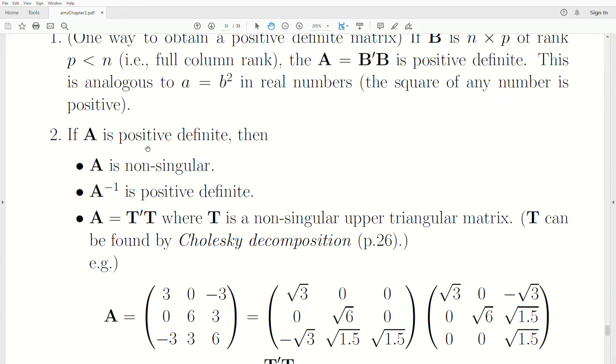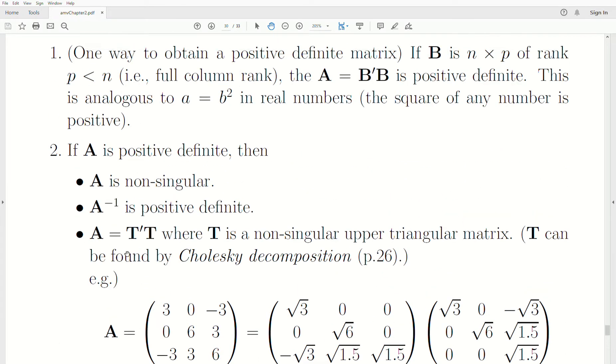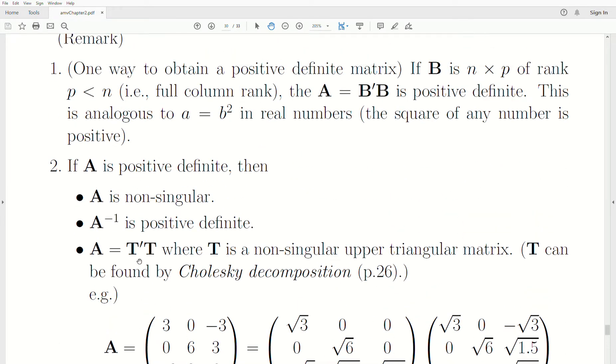Now, if we know that A is positive definite, we know it's non-singular. What does that mean? Non-singular means it's full column rank. Non-singular means it has a non-zero determinant. We know that the A inverse is positive definite, and we can decompose that matrix into the product of two matrices.